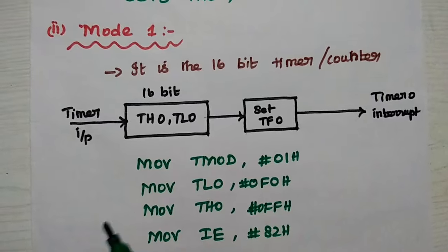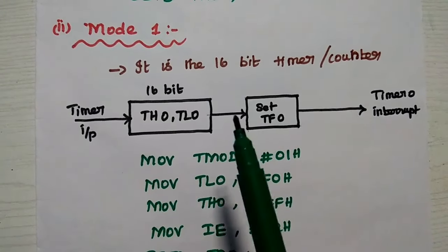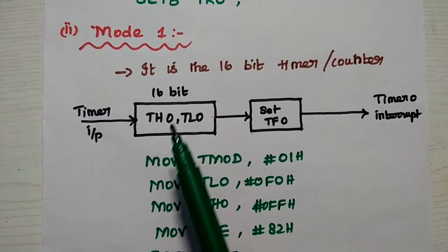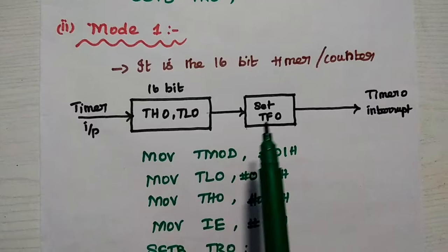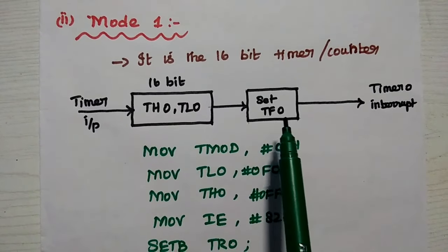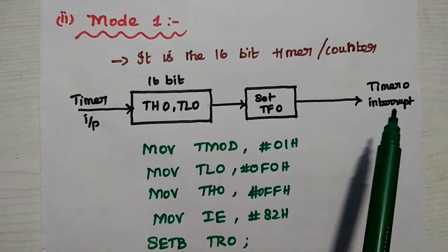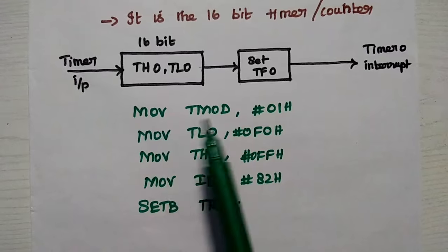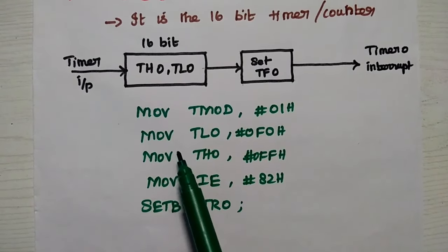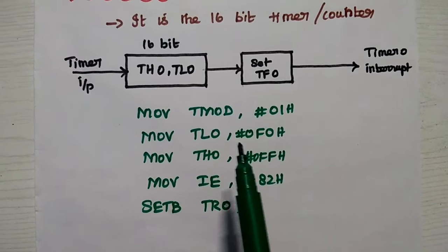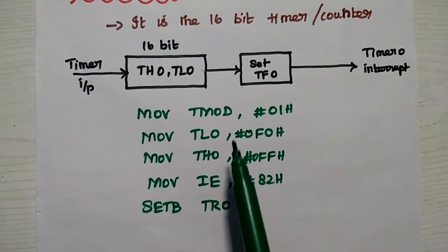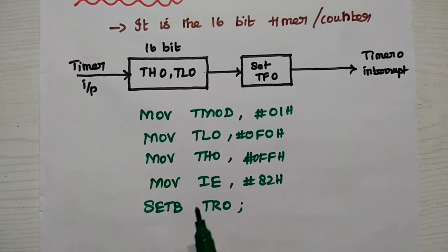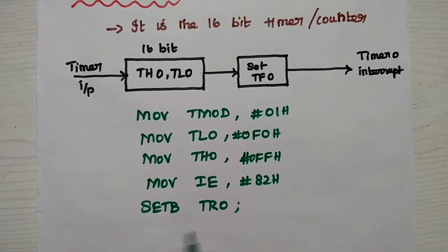Mode 1 is a 16-bit timer/counter. Both the low byte and high byte registers are cascaded together to form a 16-bit timer. When the timer overflow flag is set to 1, it interrupts the microcontroller. The program: move TMOD with 01H; move TL0 with 0F0H to enable both registers; set the interrupt enable register with 82H; then set the run control bit TR0 to 1.